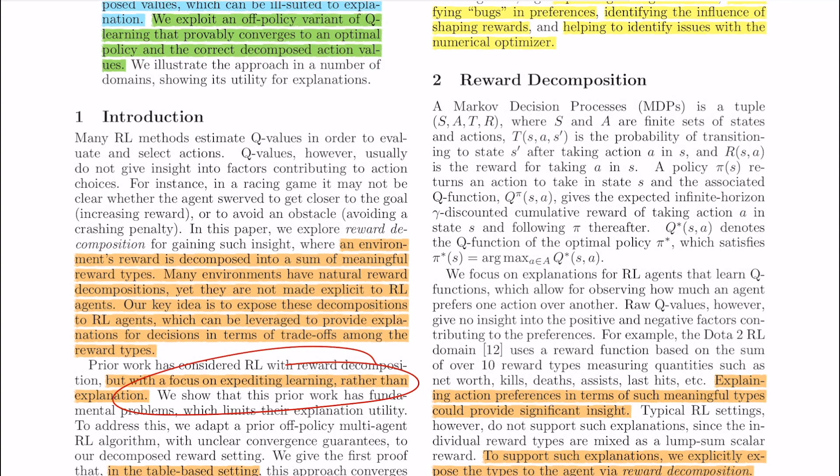It is the agent's responsibility to answer this question. One of the ways that the agent is going to do it in this paper is to explain action preferences in terms of meaningful types that could provide significant insight to the users. This is what the authors have pointed out here.